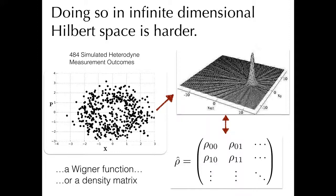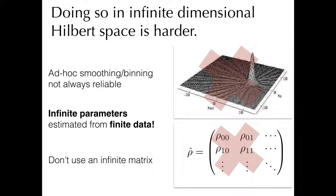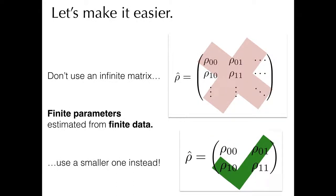Why is this hard? Well, when you try and write down a Wigner function, you take your data and then you do some inverse radon transform. You get an estimate that's maybe a little wiggly, so you try and smooth it out by applying some filters. Formally, infinite dimensional Hilbert space means that the matrix you use should be infinity by infinity — that's a really big matrix. Both of these problems suffer from the fact that we are essentially attempting to estimate an infinite number of parameters using only a finite amount of data. Statisticians would say: don't do that. So we're going to find a better way, and we're going to make it easier by observing that you don't really need that infinite dimensional matrix. From finite data, we will estimate finite parameters. That's the goal.